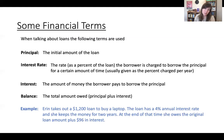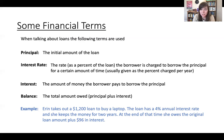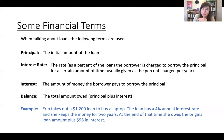So let's look at an example. Say Aaron takes out a $1,200 loan to buy a laptop. The loan has an annual rate of 4% and she keeps the money for two years. At the end of that time, she owes the original amount plus $96 in interest. Take a moment, maybe pause this video, and decide: what is the principal? What is the interest rate? What is the interest? And what is the balance?